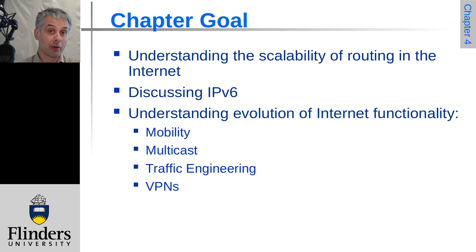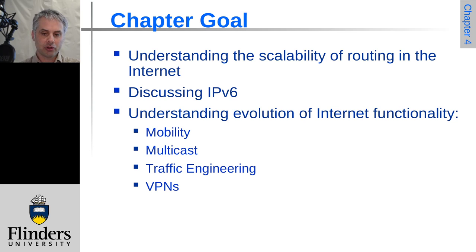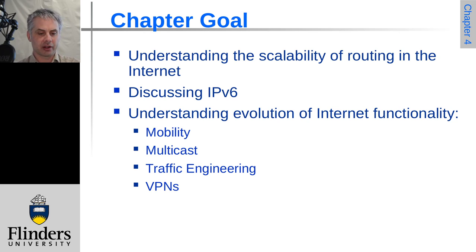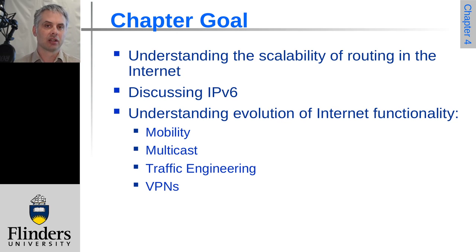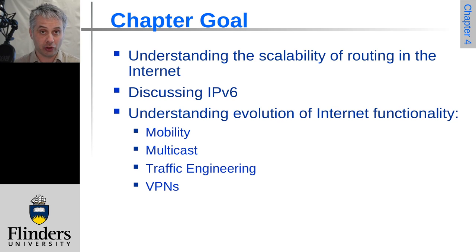Mobility with mobile phones is much more important now than it was 20 or 30 years ago. Multicast gets used differently than it was, and traffic engineering - how we can engineer network systems to sustain traffic and get the quality of service we need. And then finally VPNs, virtual private networks, and the role that they've played.